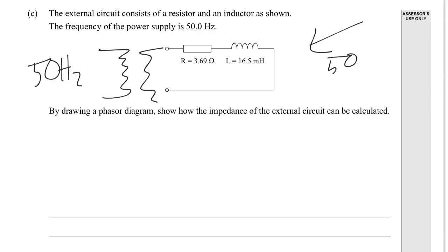It's still going to be 50 Hz on this side. So this is an LR circuit, because we've got an inductor and a resistor. It says by drawing a phasor diagram. You hate phasor diagrams, don't you? By drawing a phasor diagram, show how the impedance of the external circuit can be calculated.